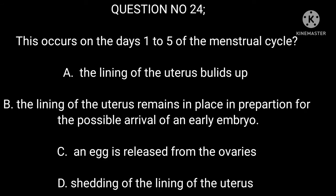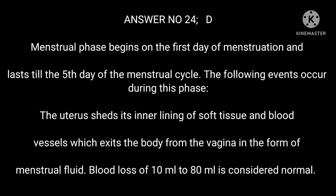Question number 24. This occurs on days one to five of the menstrual cycle: A. The lining of the uterus builds up. B. The lining of the uterus remains in place in preparation for the possible arrival of an early embryo. C. An egg is released from the ovaries. D. Shedding of the lining of the uterus. Answer: D. During days 1–5 of the menstrual cycle, the uterus sheds its inner lining of soft tissue and blood vessels, which exits the body from the vagina in the form of menstrual fluid. Blood loss of 10 ml to 80 ml is considered normal.